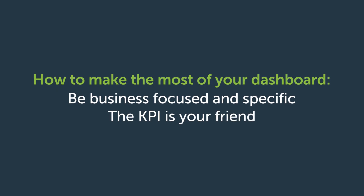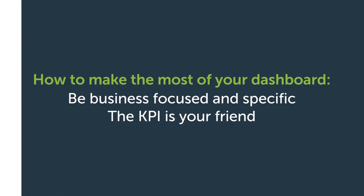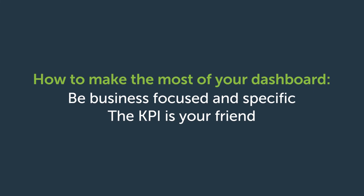The KPI is your friend. Use a color-coded gauge to track how your key performance indicators are performing. Set a threshold for your most critical items — green means good, red means it's time to take action. You could use KPIs on your top 10 SKUs, alerting you when you need more inventory.